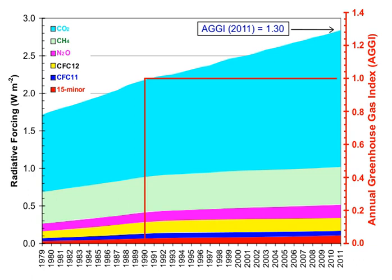Greenhouse gas intensity is a ratio between greenhouse gas emissions and another metric, such as gross domestic product (GDP) or energy use. The terms carbon intensity and emissions intensity are also sometimes used. Emission intensities may be calculated using market exchange rates (MER) or purchasing power parity (PPP). Calculations based on MER show large differences in intensities between developed and developing countries, whereas calculations based on PPP show smaller differences.